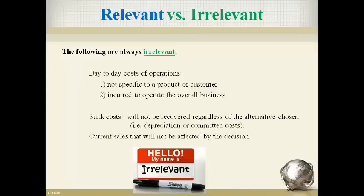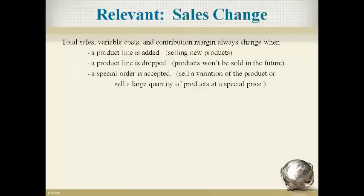Sales that will not change if the decision is made are also always irrelevant. The first step in doing the analysis related to short-term decisions is to determine the items that will change if the decision is made. These items are relevant and will be included in the analysis. Irrelevant sales and costs are ignored because they won't change in total for the company regardless of whether the decision is made or not. A decision that changes sales will always have relevant items to consider, including sales of new products, selling a variation of a product, or the decision not to sell specific products in the future.